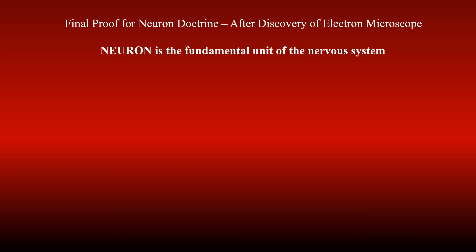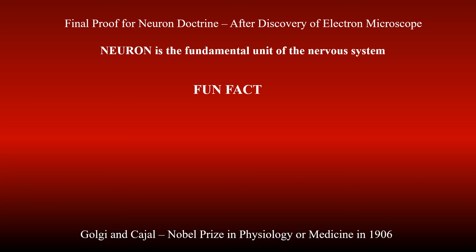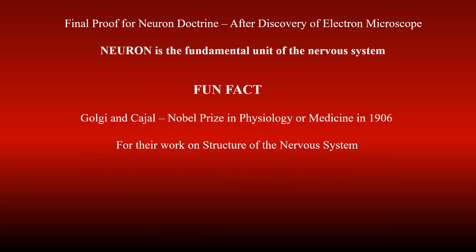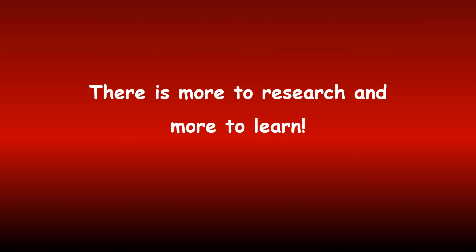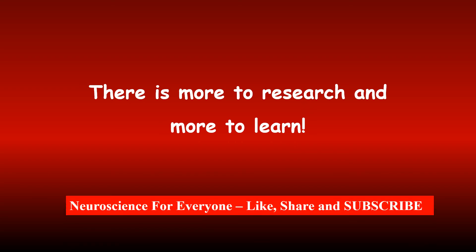Do you want to know a fun fact? For their work on the structure of the nervous system, Golgi and Cajal shared the Nobel Prize in Physiology or Medicine in 1906. However, they remained scientific rivals because of their opposing views. I hope the past few minutes have been useful to you. If so, like and share the video. To know more in neuroscience, please subscribe to this channel. Thank you.